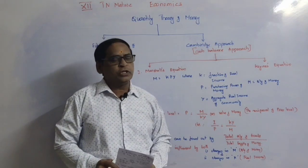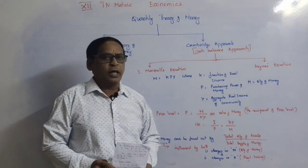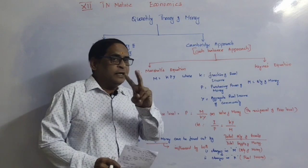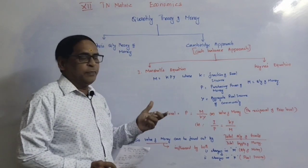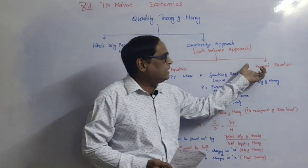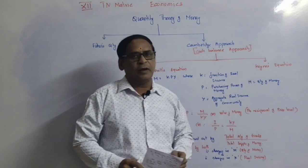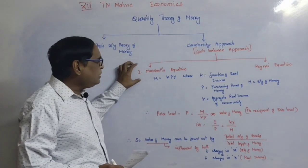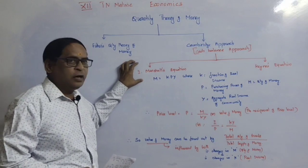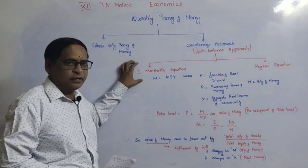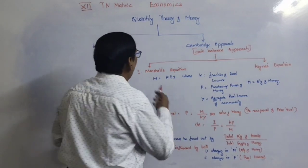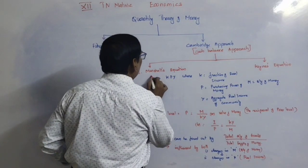According to Alfred Marshall, economist, he said M is equal to KPY. He said this is the whole equation.